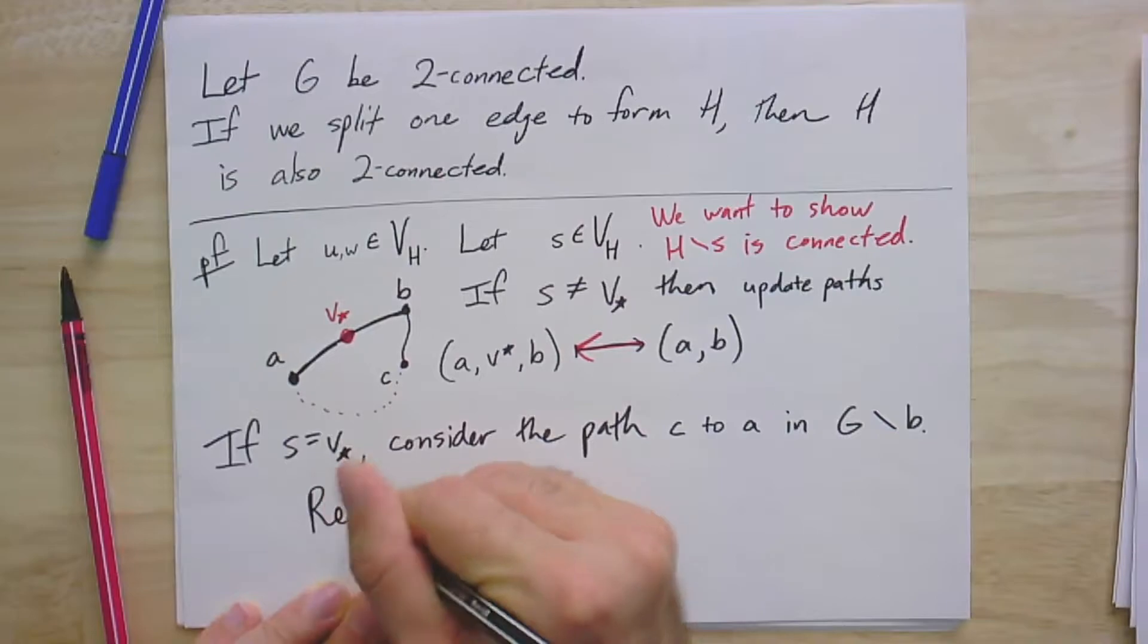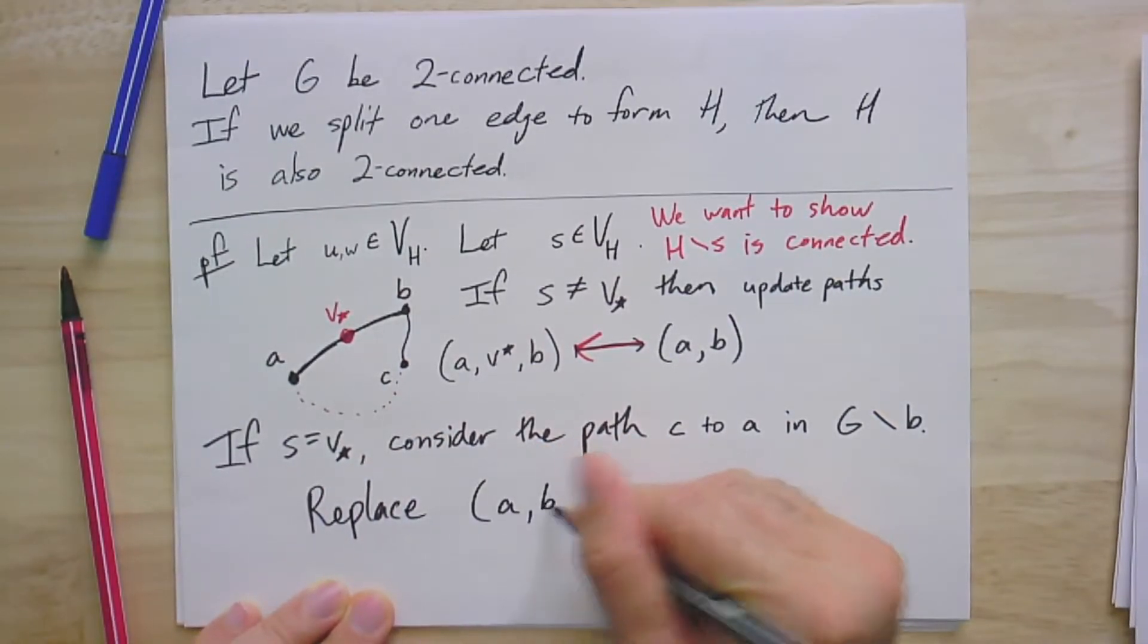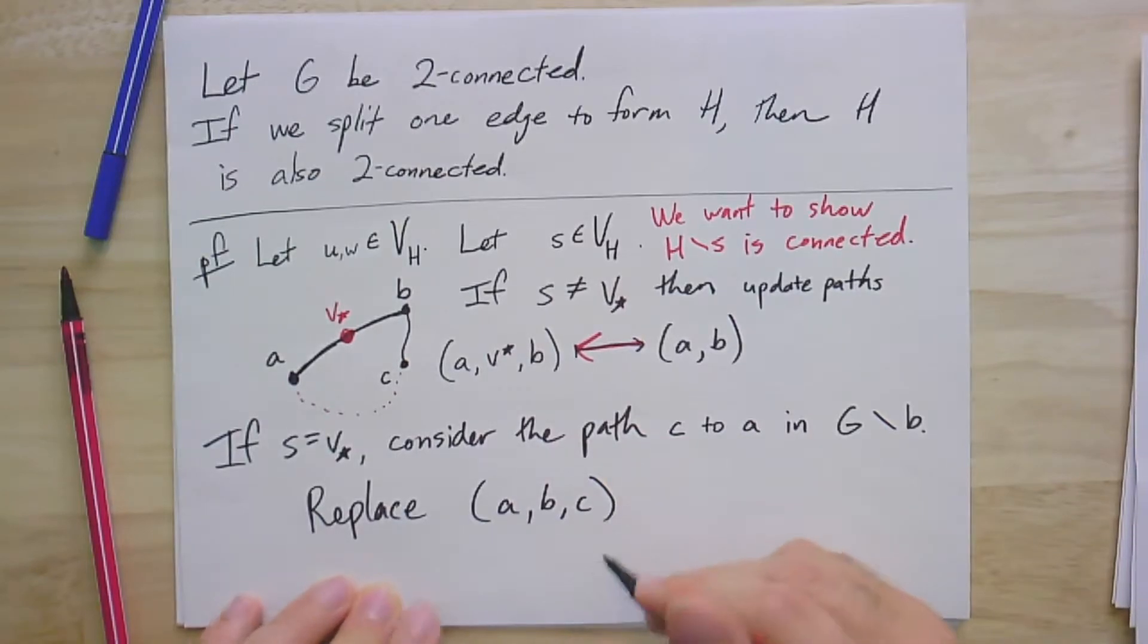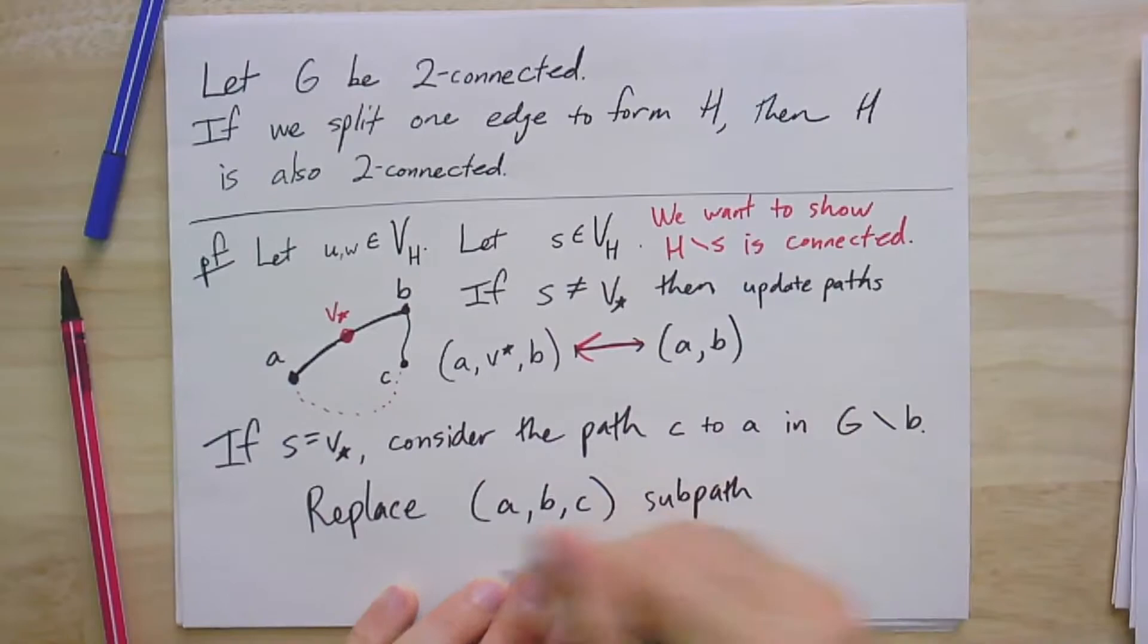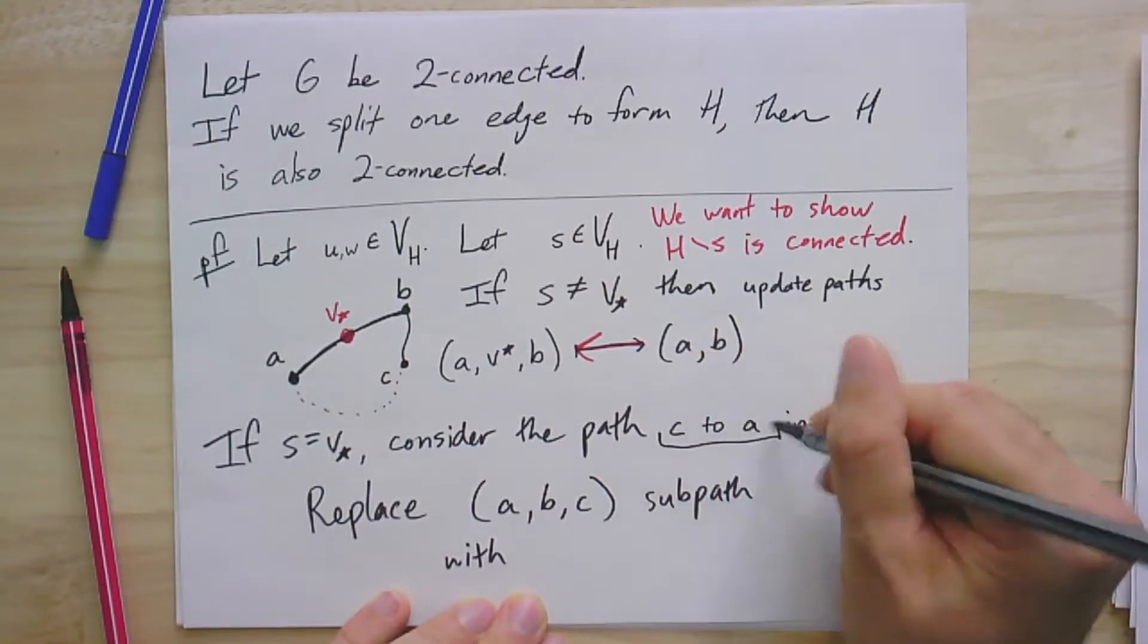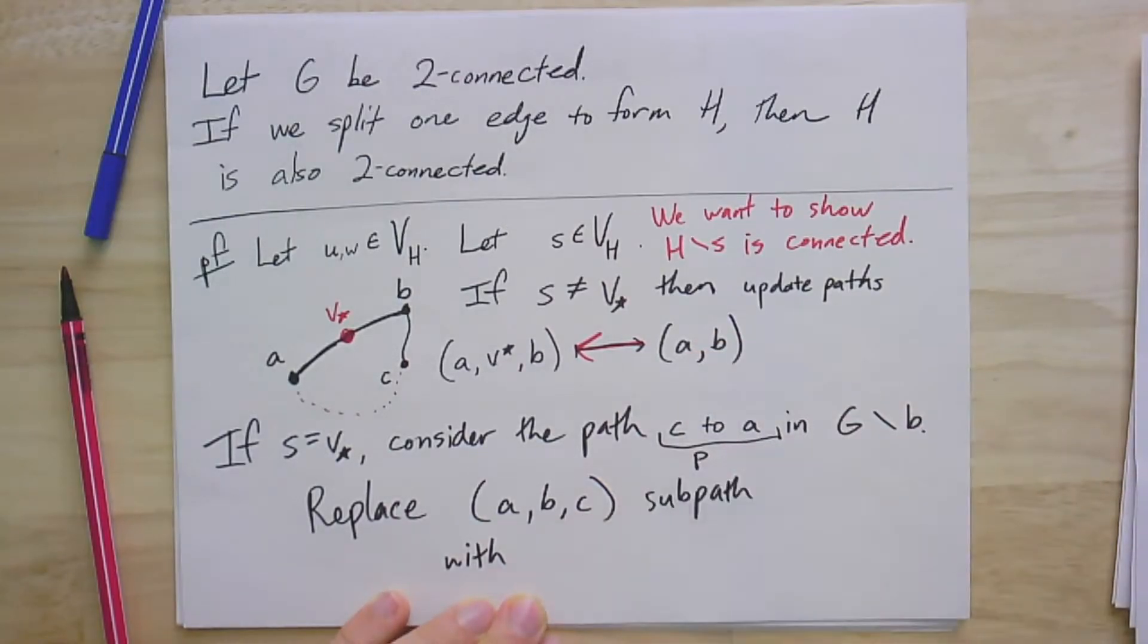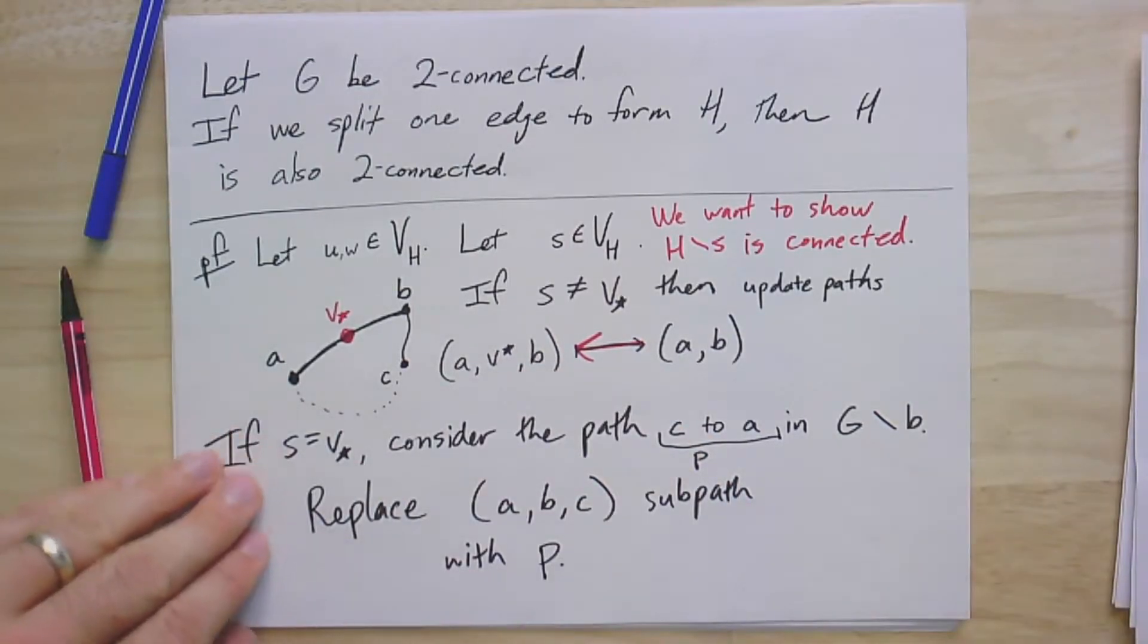And so, any path that was going to use A to B to C can be replaced now with whatever this path from A to C was. So, we're going to replace that path A, B, C in the graph G, or the subpath, this bit of a path in G, with the new path. I should give this thing a name. Can we call it P? So, we just replace it with P.